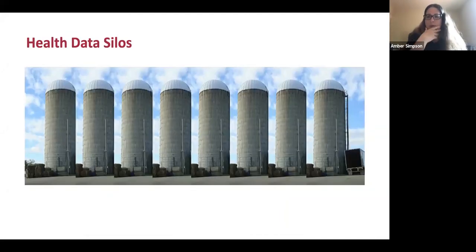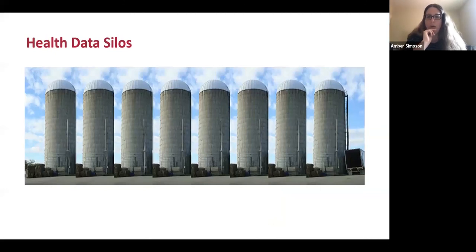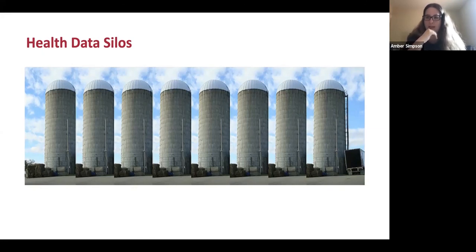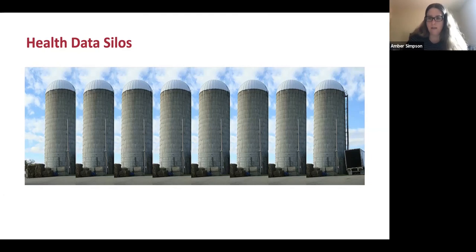Sloan Kettering is kind of the king of the health data silo. They have more cancer data than anybody else and it's really hard to get them to share it. What you experience in the US is very different from Canada — health data is really owned by the specific institution. There's no government oversight saying you have to upload your data somewhere, so the ability to transport data from one institution to another is quite limited.